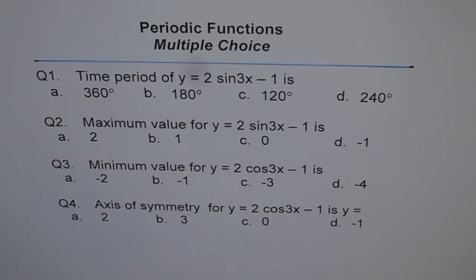Question 4. Axis of symmetry for y = 2 cos 3x − 1 is: a) y = 2, b) y = 3, c) y = 0, or d) y = −1.